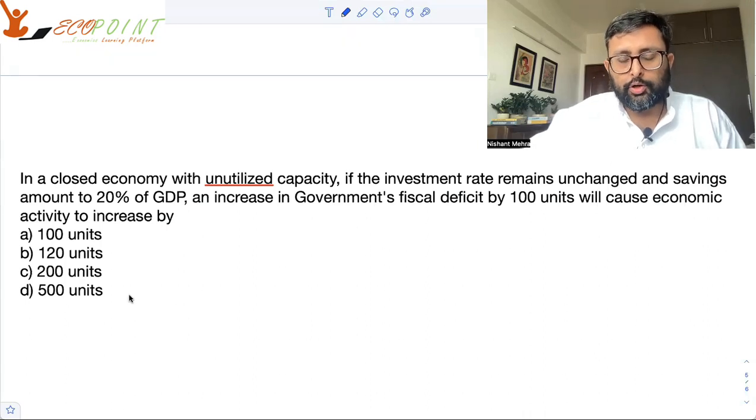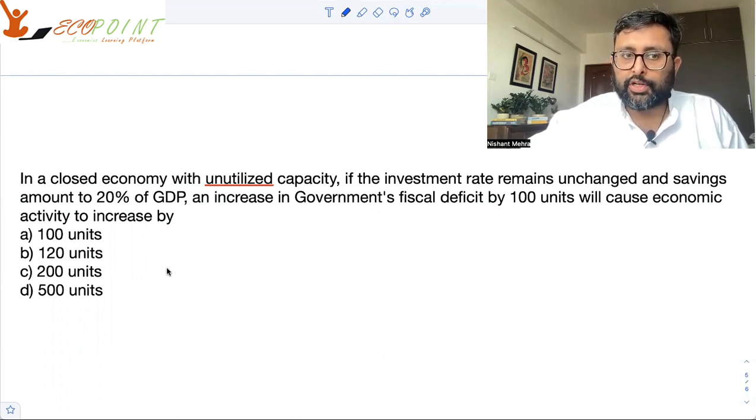Let's have a look at these two questions. These are both related to the simple Keynesian model. In a closed economy with unutilized capacity, if the investment rate remains unchanged and the savings amount to 20% of GDP, an increase in the government's fiscal deficit by 100 units will cause economic activity to increase by how many units?